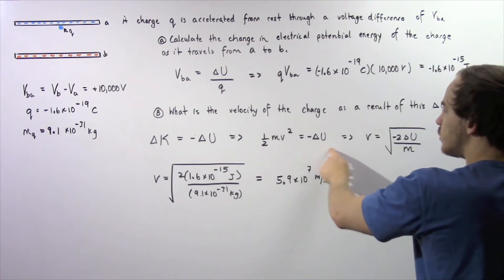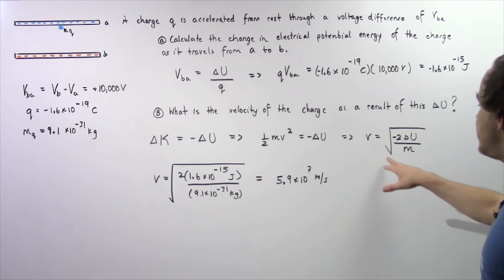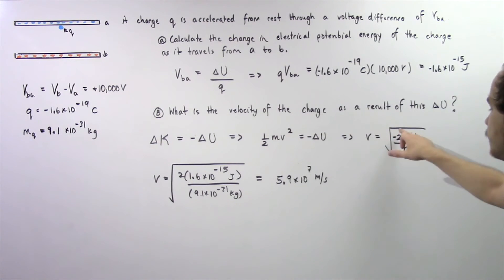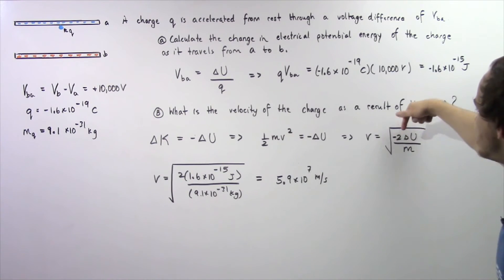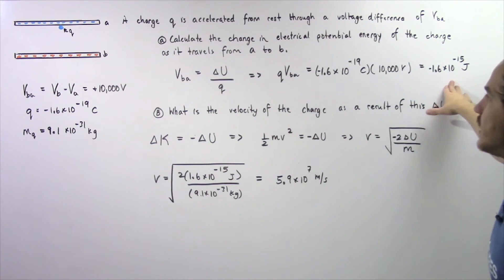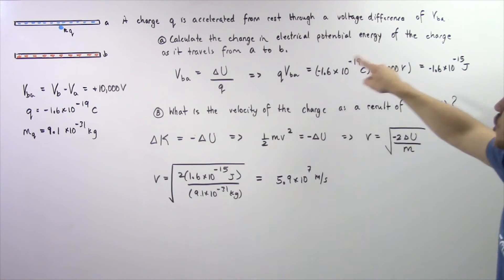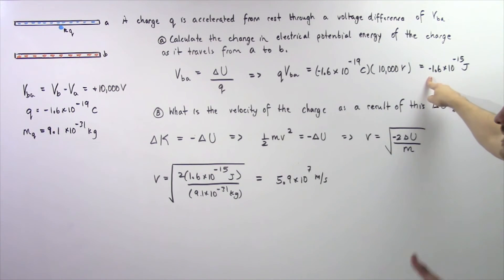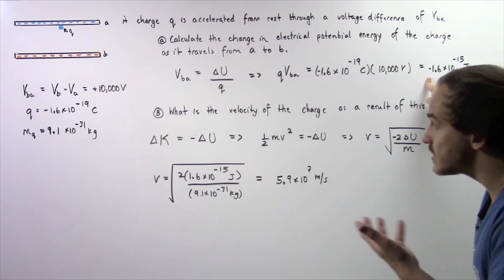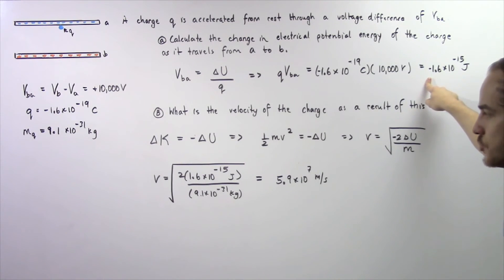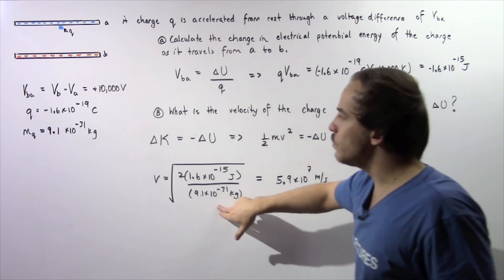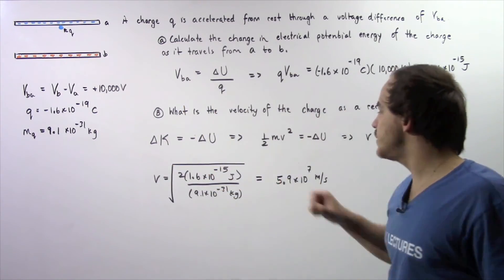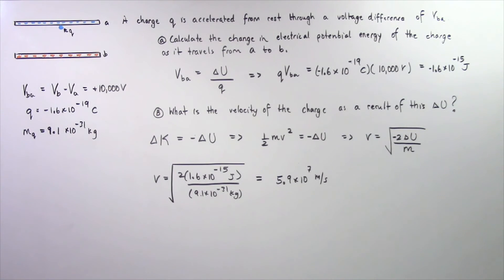Solving for v, we get v equals the square root of negative 2 multiplied by the change in U divided by m. Notice the negative sign will cancel because in part A our change in U was negative — that's because our charge lost that amount of electric potential energy. Plugging in our values, the velocity is about 5.9 times 10 to the 7 meters per second.